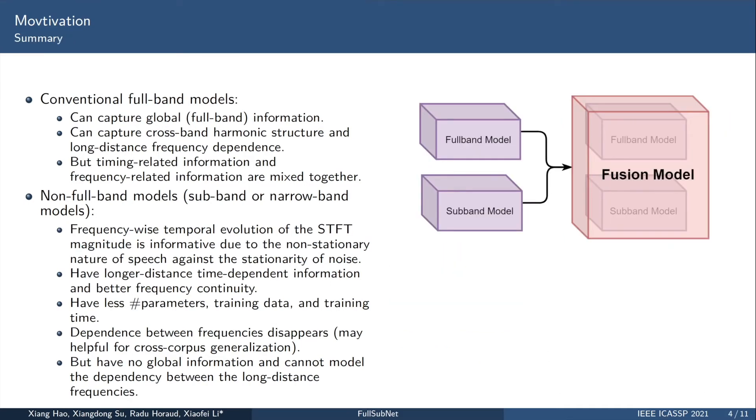In summary, the full-band model can capture global information, but the time information and frequency information are mixed together and are not targeted. The sub-band model or narrow-band model can focus on distinguishing the difference between noise and speech stationarity, as well as local spectral patterns. It can learn longer time dependence, but it has no ability to obtain global information and cannot model the dependence of long-distance frequencies. So we hope to have a model that has both the advantages of a full-band model and the advantages of a non-full-band model.